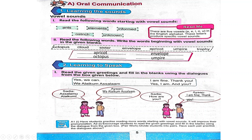Oral Communication — Learning Sounds: Bubble Sounds. Read the following words starting with vowel sounds: Ants, elements, informed, ostrich, unknown. Remember, there are 5 vowels.